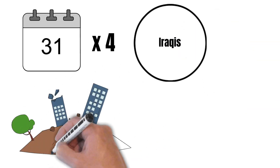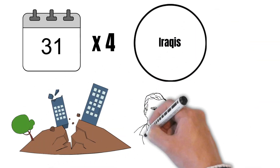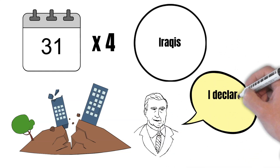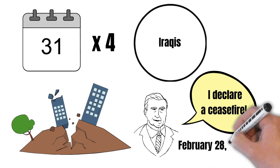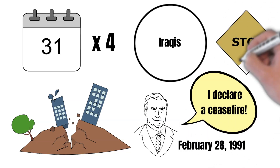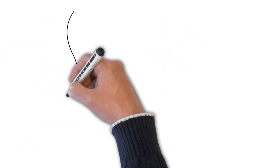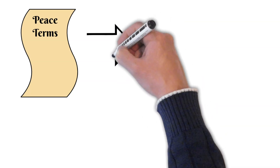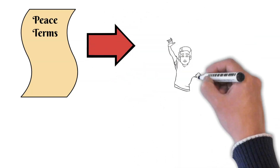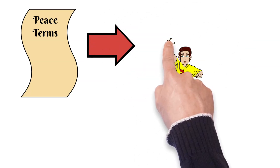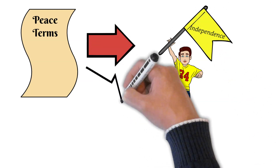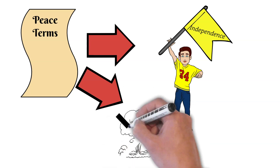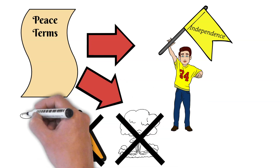Due to this, Iraqi resistance was nearing collapse, so Bush declared a ceasefire on February 28th, 1991, ending the Gulf War. According to the peace terms that Hussein accepted, Iraq would recognize Kuwait's sovereignty and independence and get rid of all its weapons of mass destruction, which included nuclear, biological, and chemical weapons.